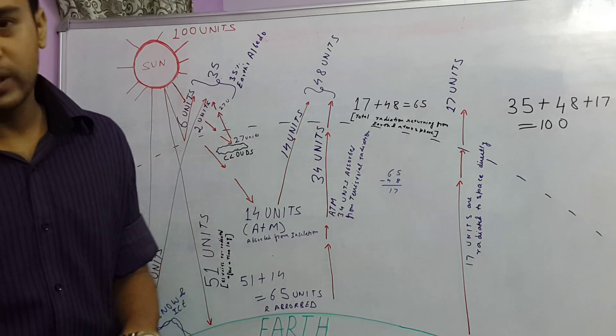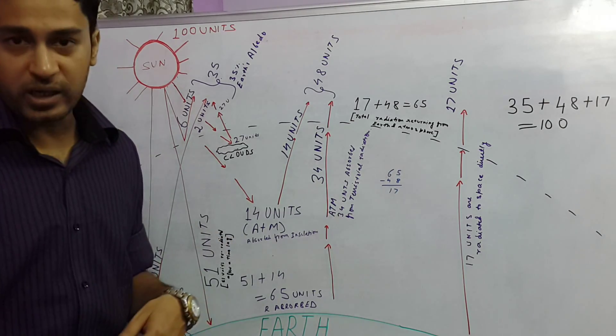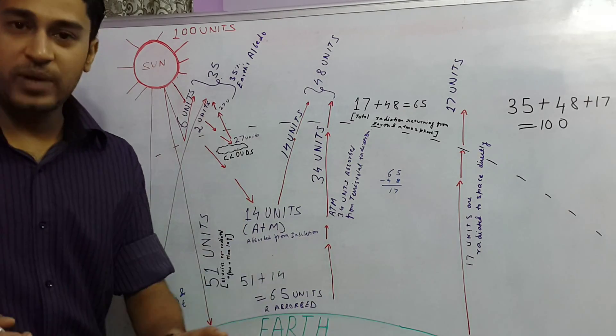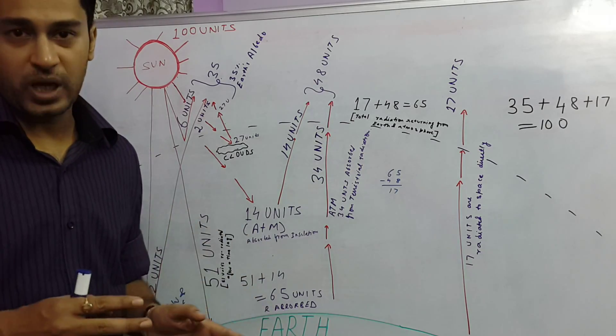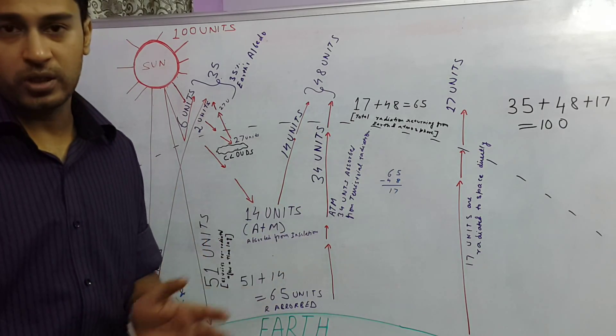Now these 51 units are re-radiated back after a certain time lag. And this time lag is enough to run various atmospheric and weather phenomena and also certain cycles that run on the earth like some chemical cycles and biological cycles.